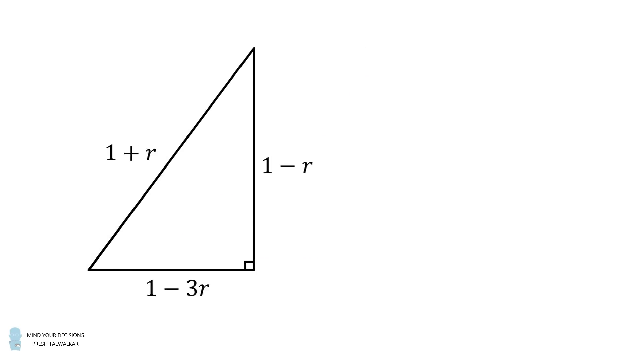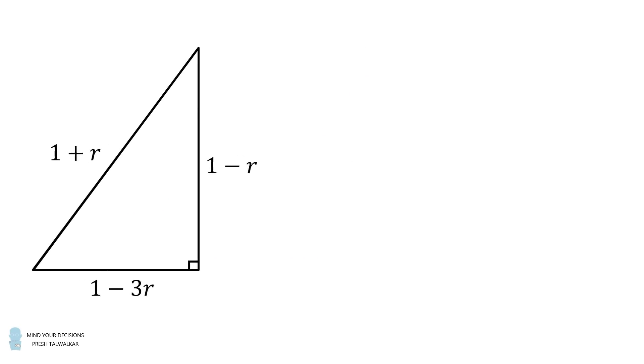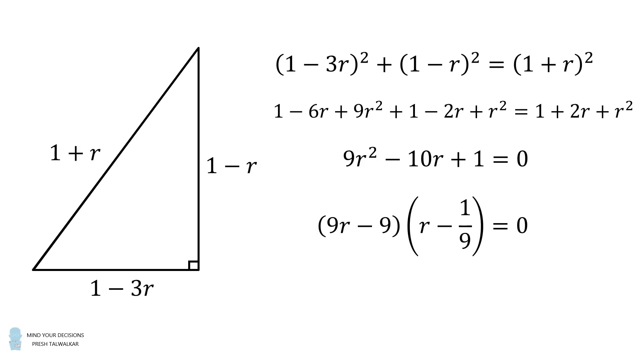Since we have a right triangle, here we go again. We have the quantity 1 minus 3r squared plus the quantity 1 minus r squared is equal to the quantity 1 plus r squared. We can expand each binomial and then collect like terms. We have a quadratic equation. This is easily factorable. One factor will be 9r minus 9, and the other factor will be r minus 1 over 9.